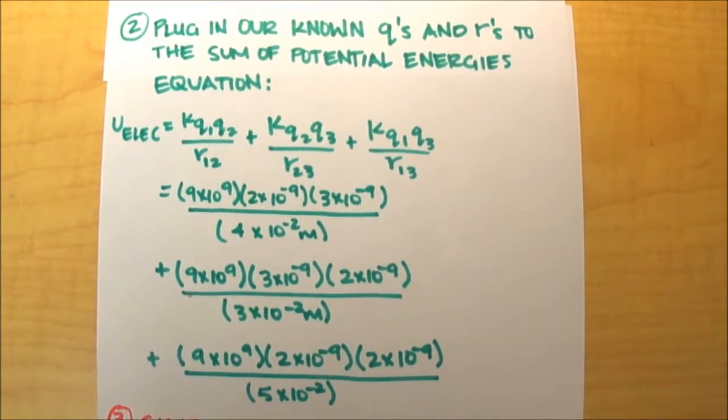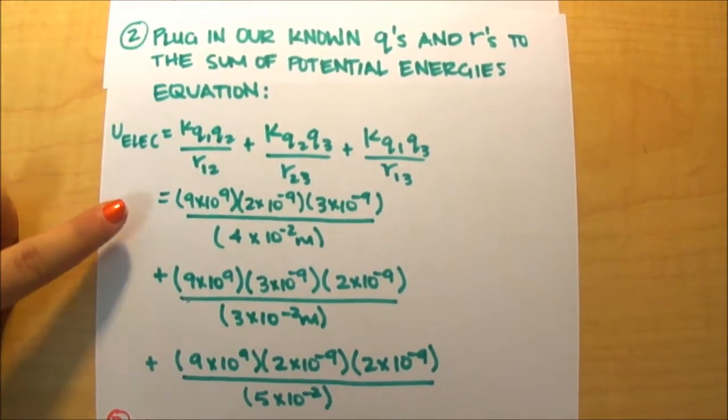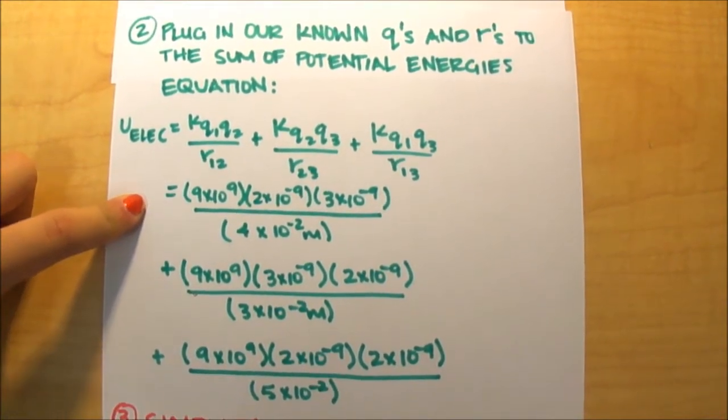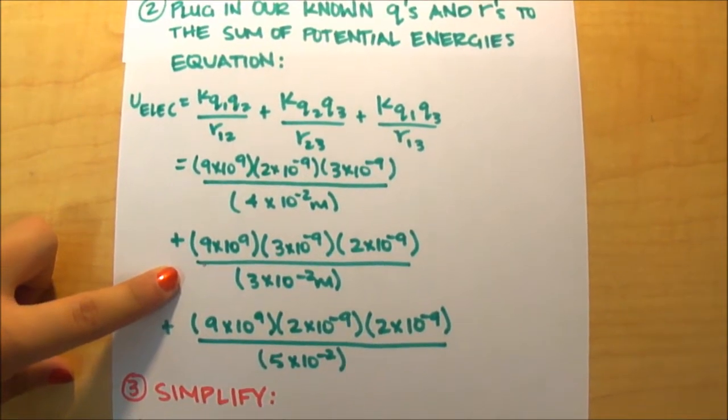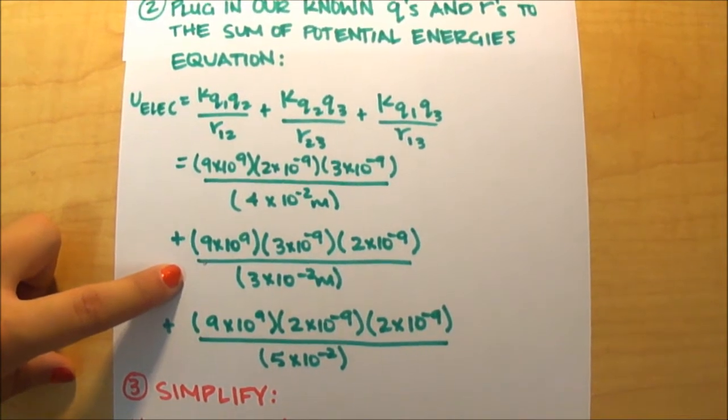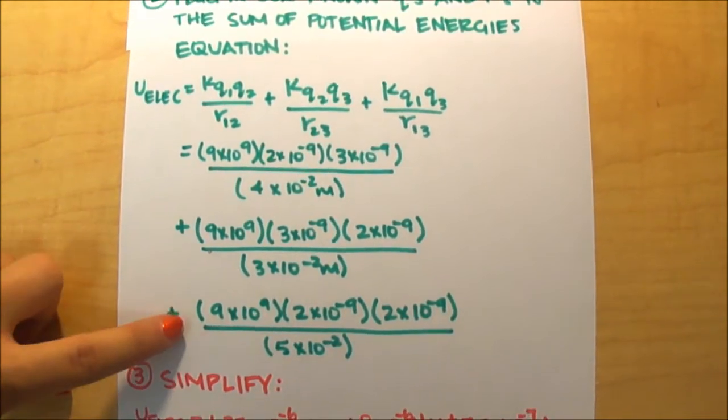Basically, what we have here is the potential energy from charge one to charge two, plus the potential energy from charge two to charge three, plus the potential energy from charge three to charge one.